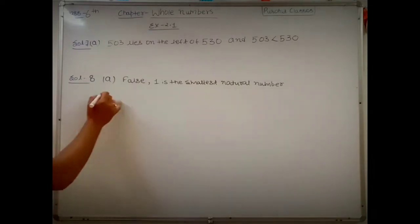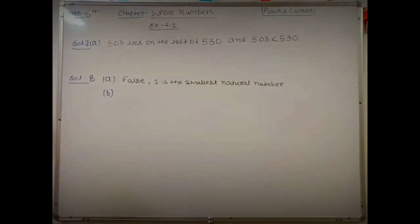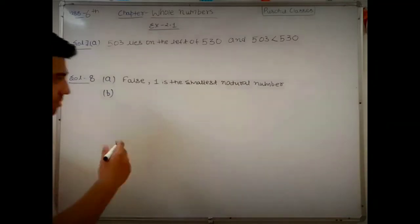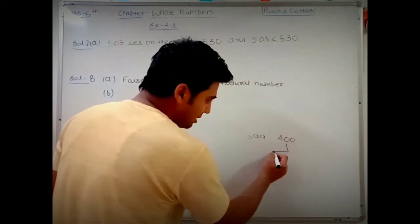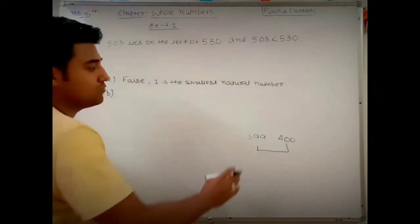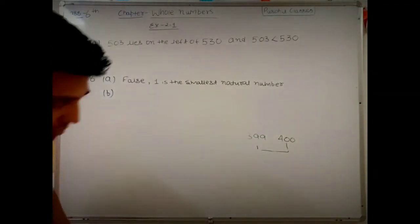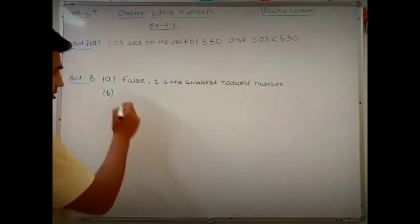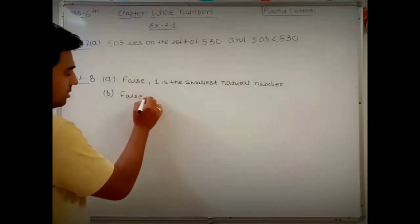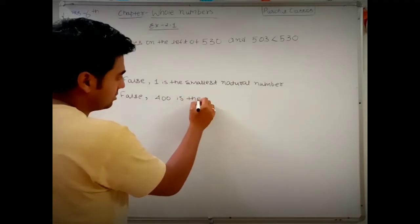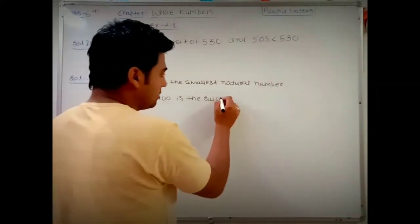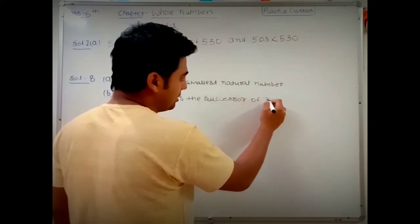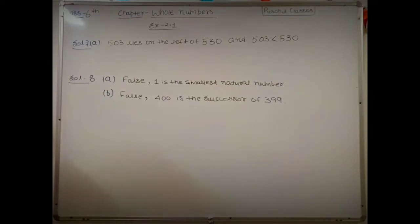Part b says: 400 is the predecessor of 399. Think about it — 400 is written to the right of 399 on the number line, so 400 is actually the successor of 399, not the predecessor. This statement is false. The correct statement is: 400 is the successor of 399.